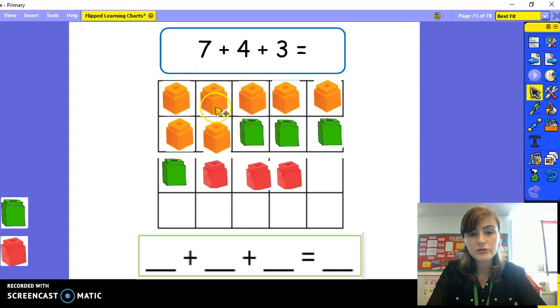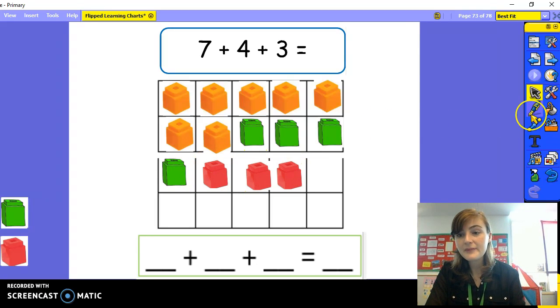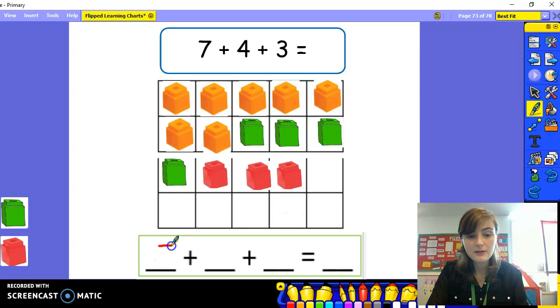One, two, three, four, five, six, seven, eight, nine, ten, eleven, twelve, thirteen, fourteen. Seven plus four plus three equals fourteen. Well done. You're getting very good at these.